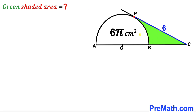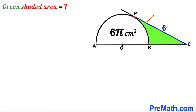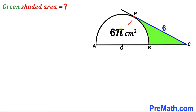Welcome to pre-math. In this video we have got a semicircle with center O placed on line AC, along with a tangent CP where point P is the point of tangency. This gives us the green shaded region. The segment CP is 6 centimeters, the area of the semicircle is 6π square centimeters, and our task is to calculate the area of the green shaded region.